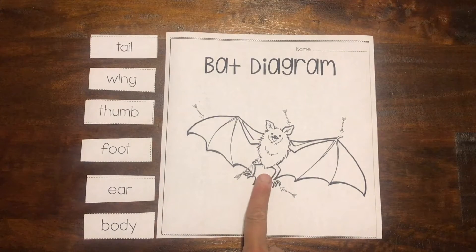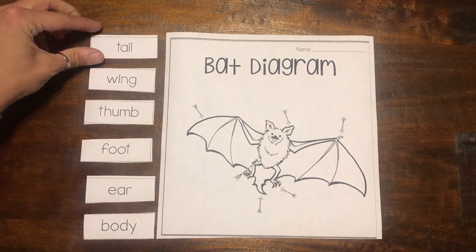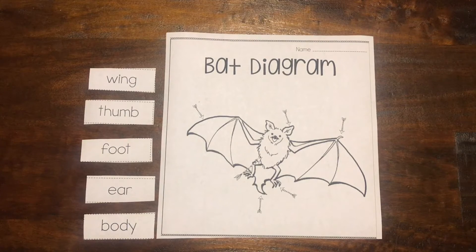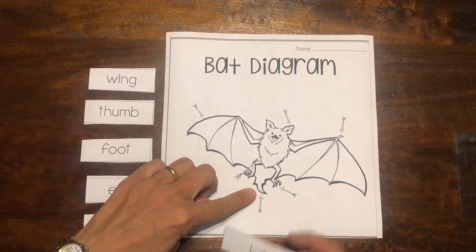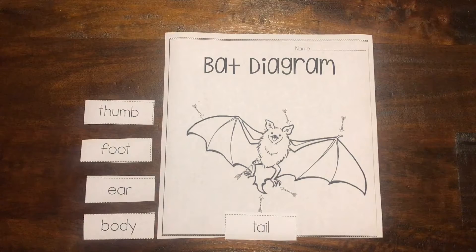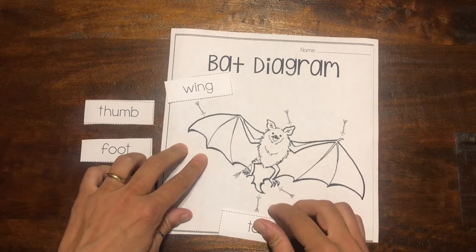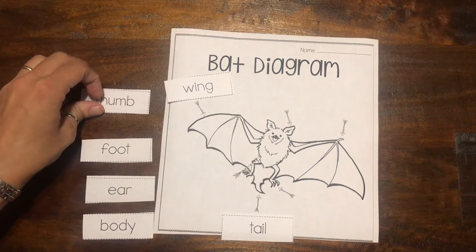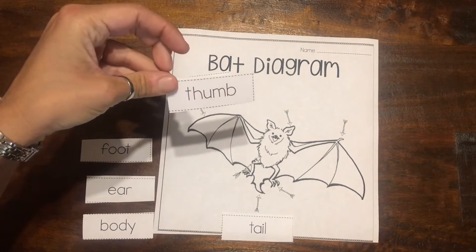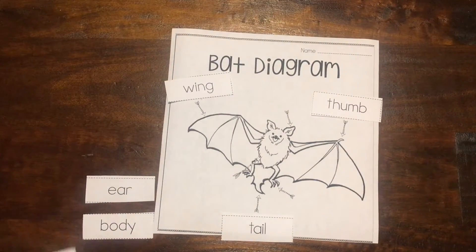Now let's take a look at different parts of a bat. Here's our cute little bat and we're going to label the different parts. Let's start with the first word: tail. Can you find the bat's tail? Right there. The next one is wing — the bat's wings, so we'll put it right there. And the next label says thumb. There's the bat's thumb.